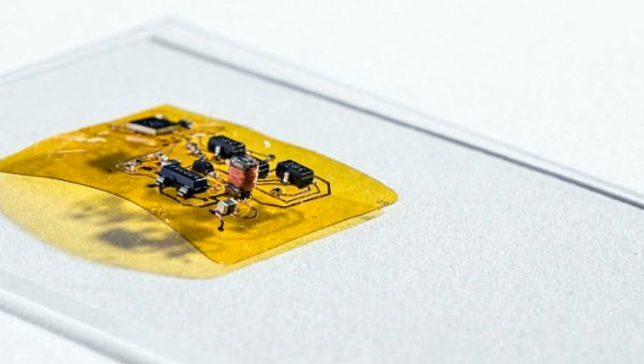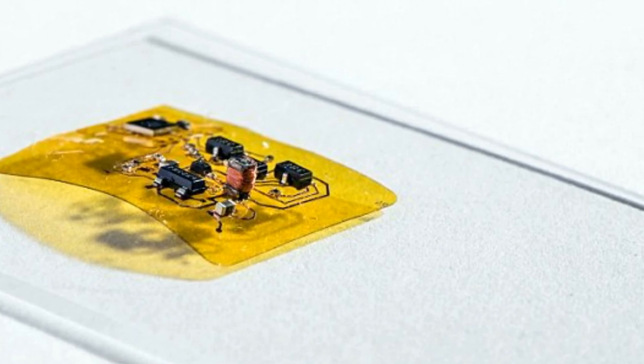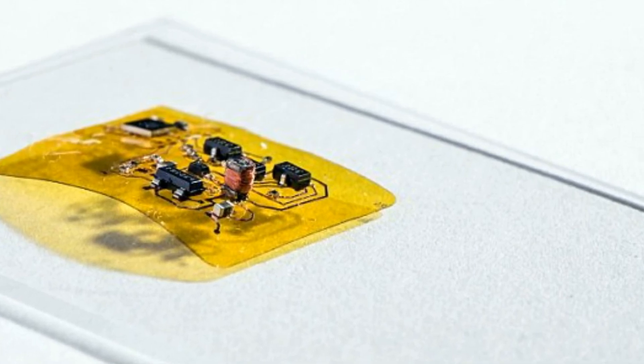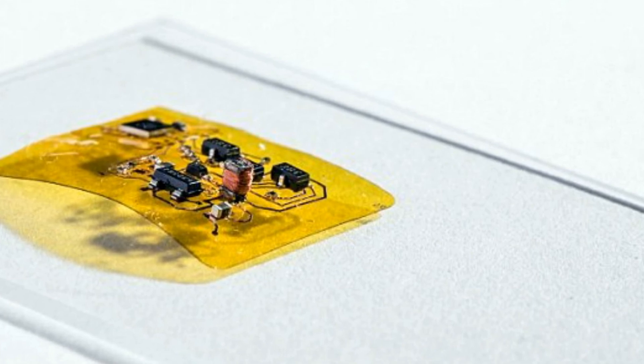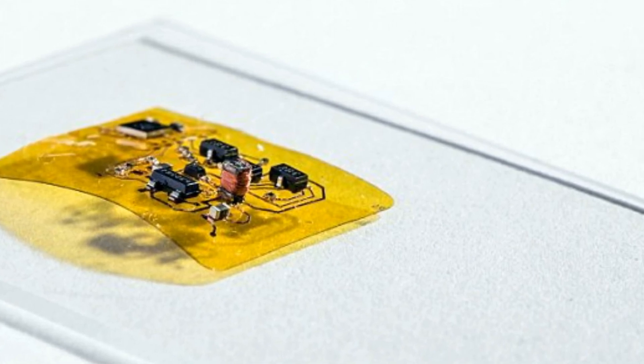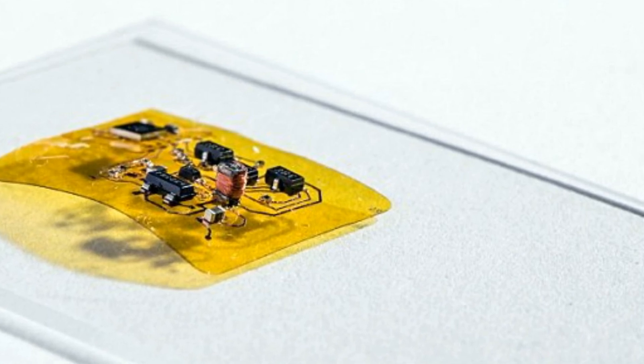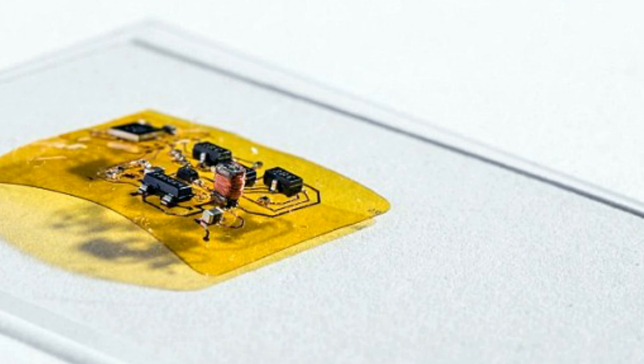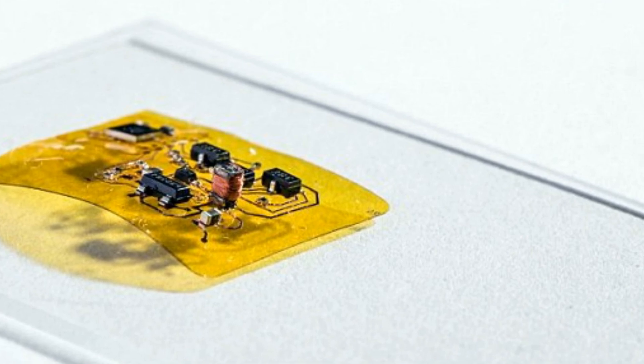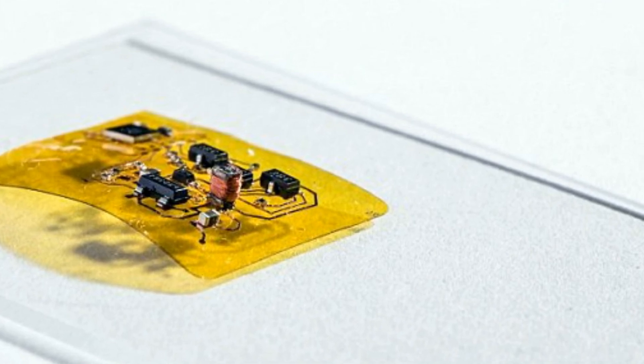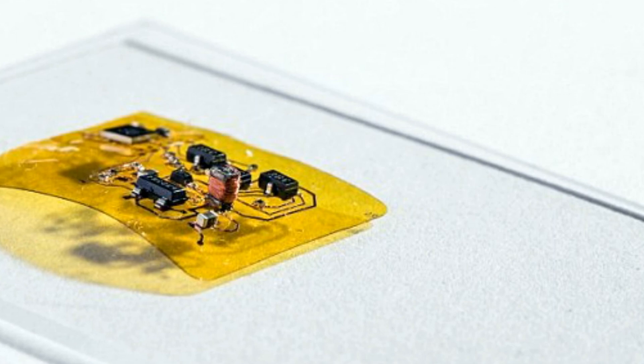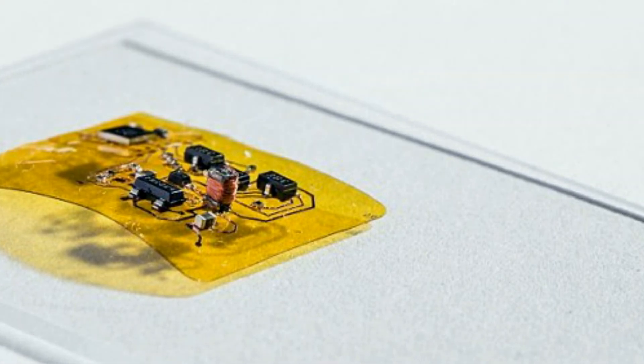To give RoboFly control over its own wings, the engineers added a microcontroller to the same circuit. 'The microcontroller acts like a real fly's brain telling wing muscles when to fire,' said Vikram Iyer, a doctoral student in the UW Department of Electrical Engineering. 'On RoboFly, it tells the wings things like flap hard now or don't flap.'